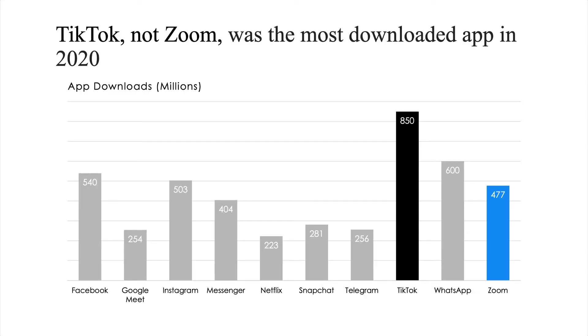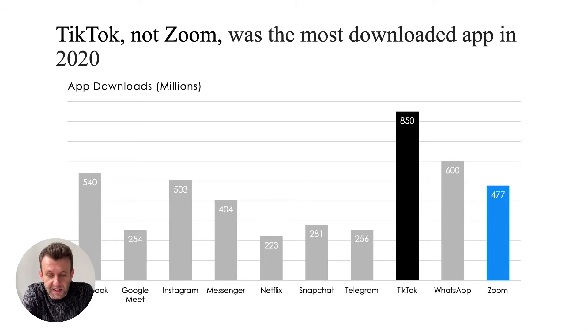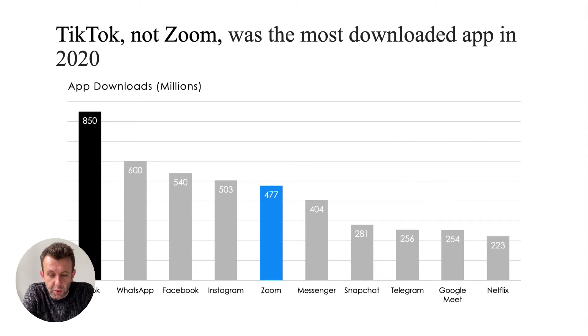The problem is that all the apps have been ordered alphabetically across the bottom, which means when you first look at it, your eye is immediately drawn to the right-hand side. On first impression, it gives the impression that it's TikTok, then WhatsApp, then Zoom that were the top three most downloaded apps. We can fix this very quickly by ordering them by number of downloads rather than alphabetical order.